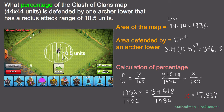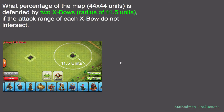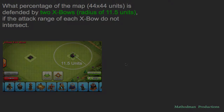That circle right here is 17.88% of the whole map. So just imagine if you had five of those archer towers — you'd almost have your whole map defended by just archer towers. Now let's try a second problem on your own. What percentage of the map is defended by two X-bows if the attack range of each X-bow does not intersect? Pause the video, then unpause for the brief explanation.